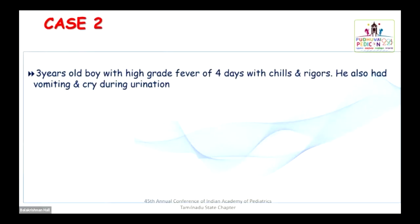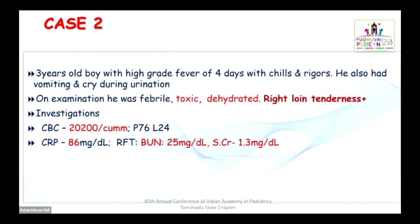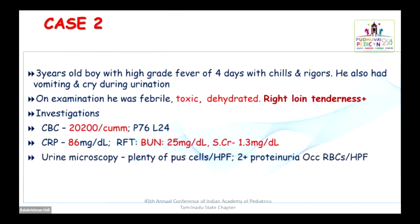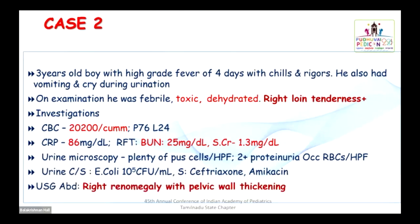Coming to the next scenario: This is a 3-year-old boy who had high-grade fever for 4 days with chills and rigors. He also had vomiting and cried during urination. On examination, he was febrile, looking toxic and dehydrated. Right loin tenderness was present. Total count was elevated, CRP was high. He also had mild elevation of blood urea nitrogen and creatinine. Urine routine showed plenty of pus cells with 2 plus protein. Culture is growing E. coli — significant growth. Imaging showed right renal megaly with pelvic wall thickening. So this is a right acute pyelonephritis picture — complicated urinary tract infection.